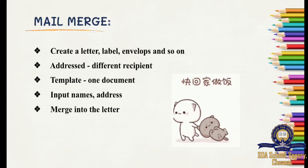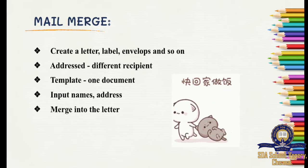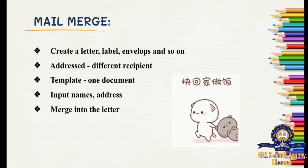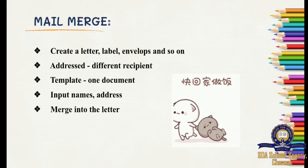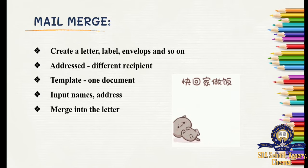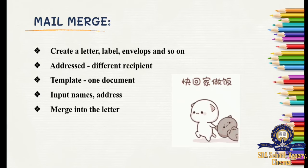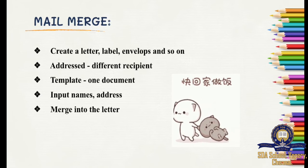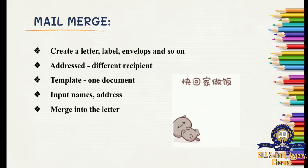Nowadays you use WhatsApp — if you want to send a message to everyone, you create a group and send a forward message. But here, you just have to type one invitation and send it through email — that is the best way. You cannot send emails through WhatsApp. But using Mail Merge, you can send the invitation to your friends' email IDs. You can create a letter, label, envelope, invitation, and so on.